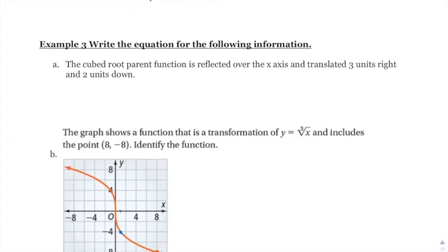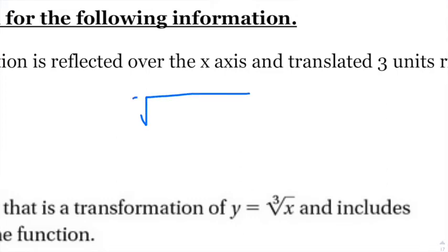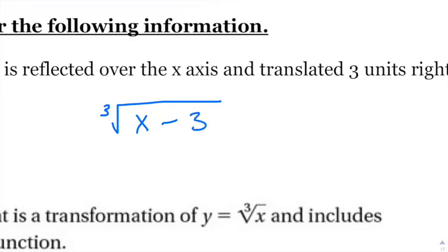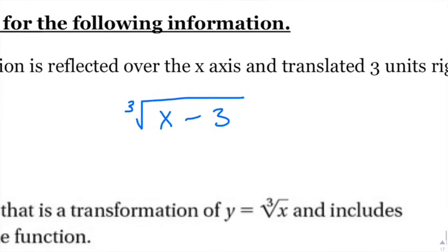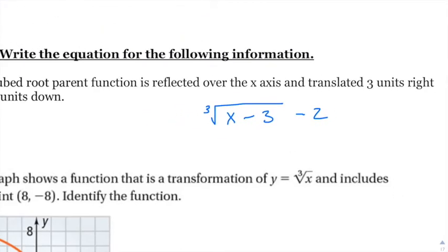Now write the equation: the cube root parent function is reflected over the x-axis and translated three units to the right and two units down. Going right three means minus three inside the radical; two units down means minus two outside; the reflection across the x-axis means a negative out in front of the radical. If it were a reflection across the y-axis, the negative would go inside the radical.